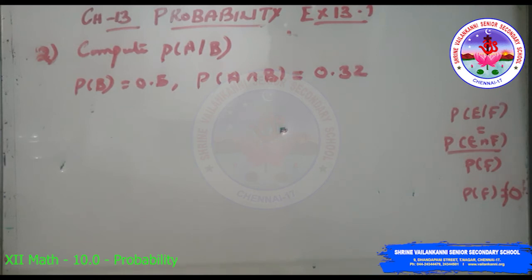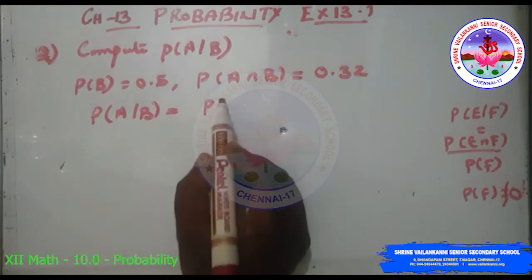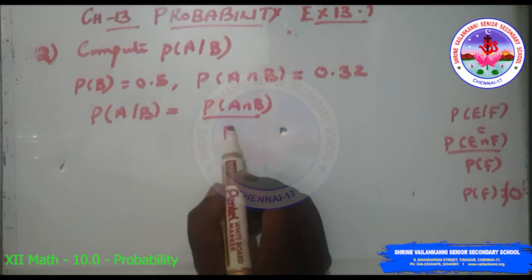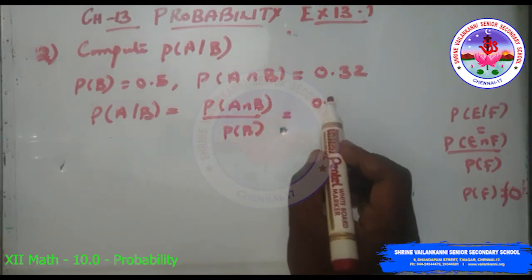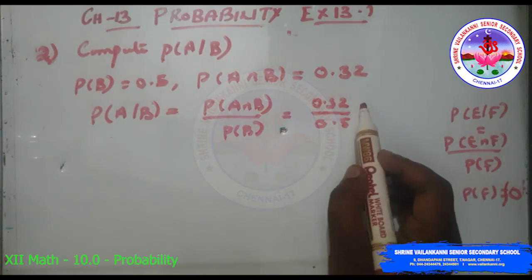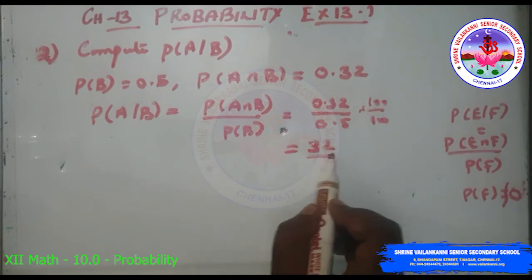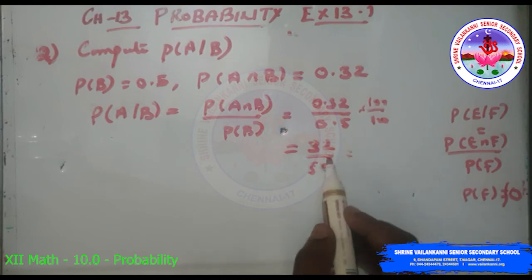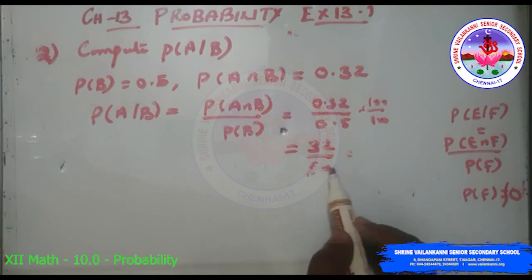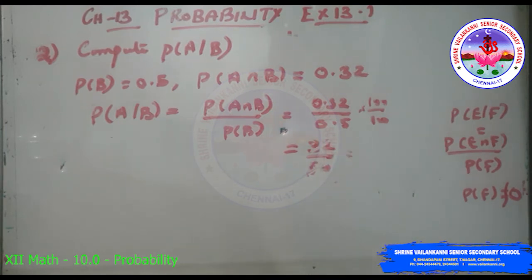Question 2: Compute P(A|B) if P(B) = 0.5 and P(A∩B) = 0.32. Substituting in the formula: P(A|B) = P(A∩B)/P(B) = 0.32/0.5. Multiplying by 100 gives 32/50, which simplifies to 16/25.